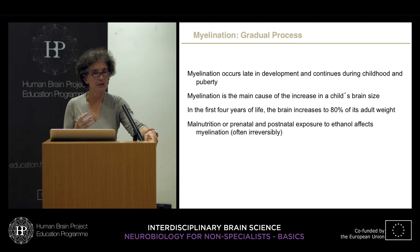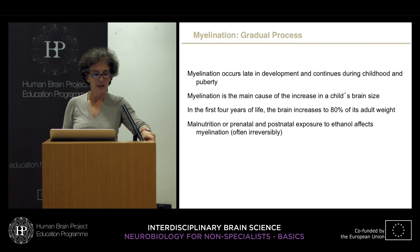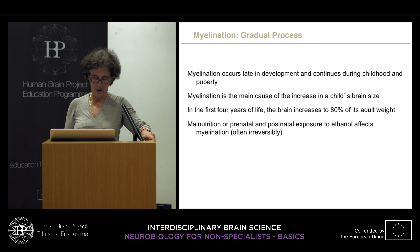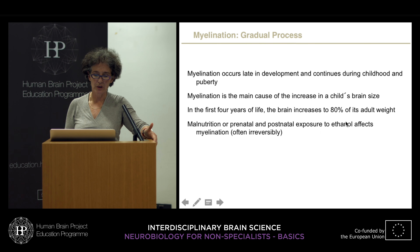If myelin — the sheath formed around the axons of the fiber tract — is so important for conduction velocity, you can easily imagine that any effect that perturbs myelination, either prenatally or postnatally, can have deleterious effects. The best described effects we know are malnutrition during the late phases of human development in utero, and also exposure to ethanol perinatally and postnatally, which affects myelination often irreversibly.